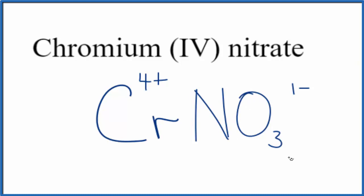We need four nitrate ions, each one is 1-, to balance out the 4+. So we put parentheses around the nitrate and put a subscript 4. Four times 1- equals 4-, which balances out the 4+. Net charge is zero.